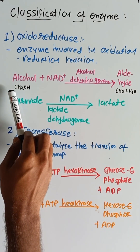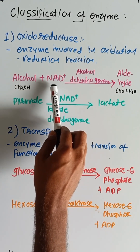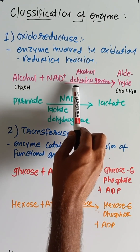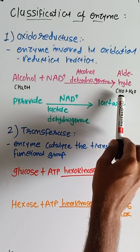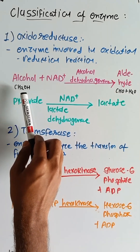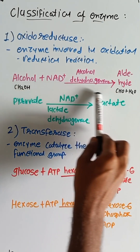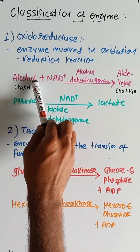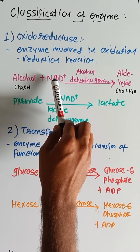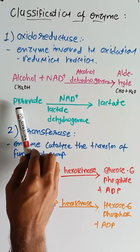An example of oxidoreductase: alcohol plus NAD+, with alcohol dehydrogenase, results in removal of a hydrogen to form an aldehyde and H2O. Here, CH2OH undergoes oxidation and is converted, while OH undergoes a reduction process and is converted into H2O.